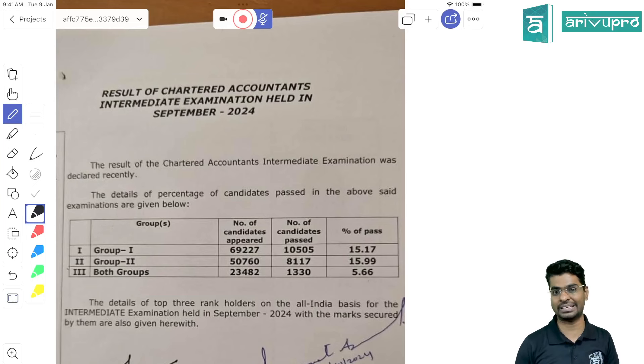A lot of you would be disappointed saying what is this five and a half percent with CA inter both modules. But the trend has been that students, even though they write both modules, focus on clearing one module at a time because of exams happening once in four months. So it's not very disappointing.